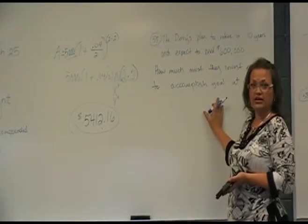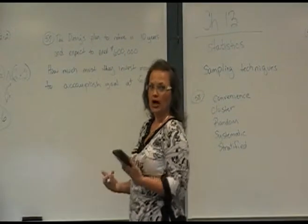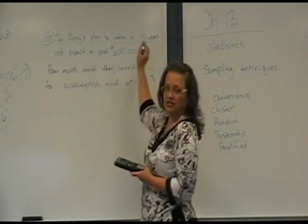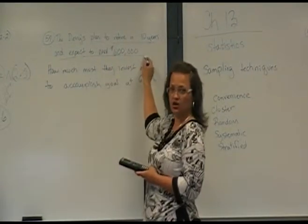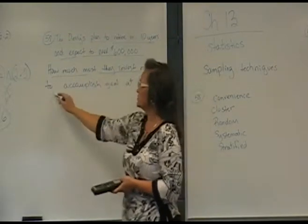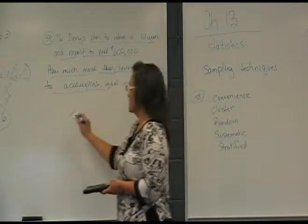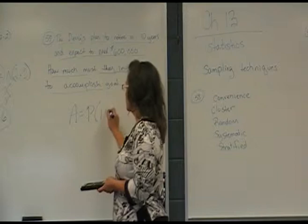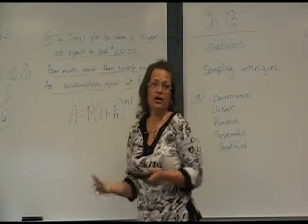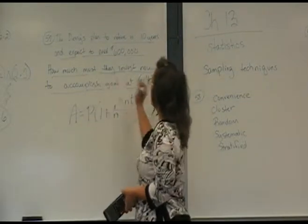Okay. Number 57, we're going to use that formula again, but this time we're going to know what we're trying to accumulate to, and we're going to work backwards to see what we need to invest. The problem says the dearies plan to retire in 10 years and expect to need $600,000. How much must they invest now to accomplish that goal if interest is paying 6.4%?